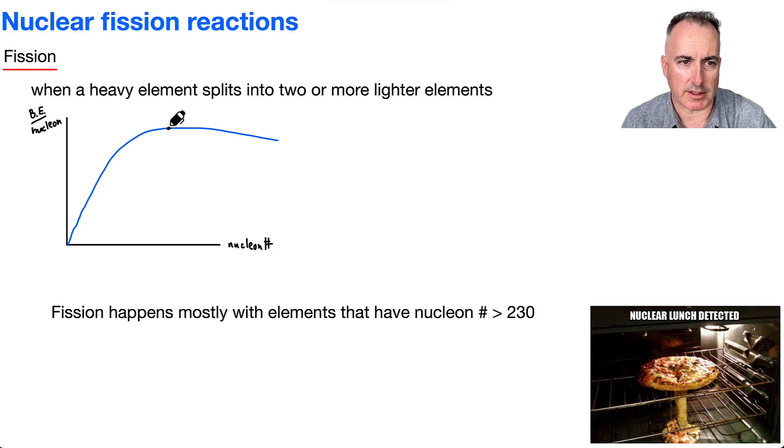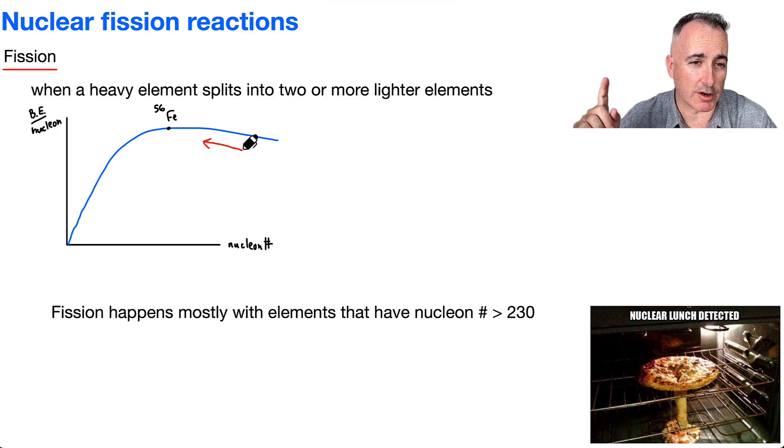Let's first look at this binding energy per nucleon curve. This peak right here is at iron-56. We want for things to go up. That's when things are going to happen naturally. So over here that could be fusion, but I don't care about fusion. I'm only caring about fission in this case. Fission is when you go from heavy things, so a large nucleon number, to smaller things. The reason why is because you need to go up on this curve.